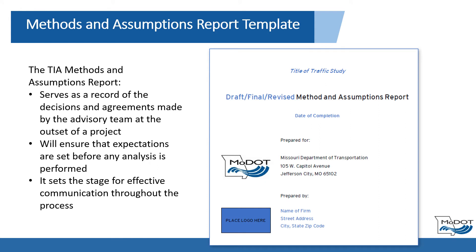A TIA Methods and Assumptions report serves as a record for the decisions and agreements made by the advisory team at the outset of a project, will ensure that expectations are set before any analysis is performed, and it sets the stage for effective communication throughout the process. The intent is for this report to be updated as methodologies and assumptions change during the project, and it can then be referenced and appended to later project reports.